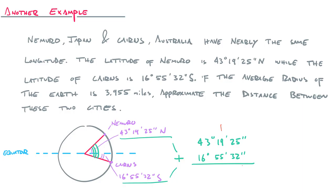25 and 32 is 57, so we get 57 seconds. But we do get something that exceeds 60 in the minutes column. We actually get 74 minutes. 55 and 19 is 74. I subtracted 60 away from that and turned that into one degree. 74 minus 60 is 14, so we get 14 minutes, and then 43 degrees plus 16 degrees plus that carried over one degree is 60 degrees.